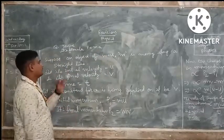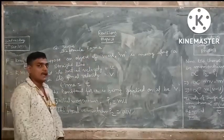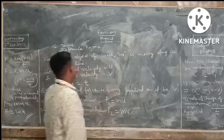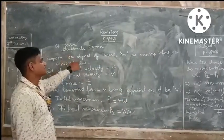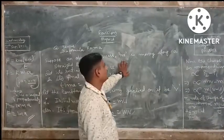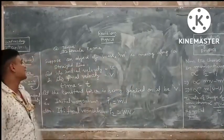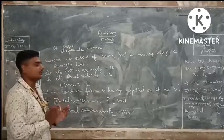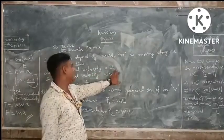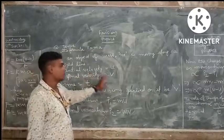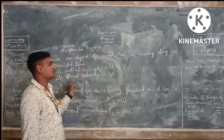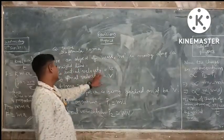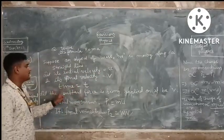So moving further, we need to derive force equals to ma, so we need an accelerated body. Suppose an object of mass m is moving along a straight line. When its initial velocity is u and its final velocity is v, and the time taken by the body is t.